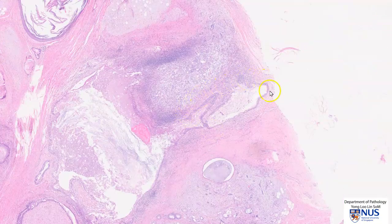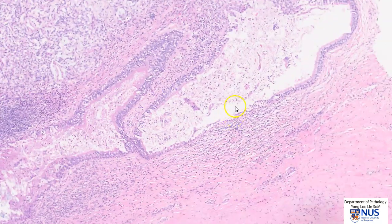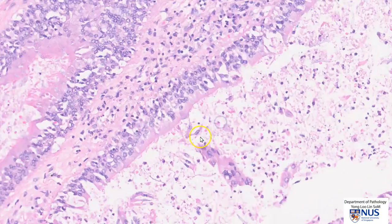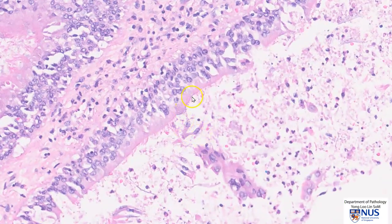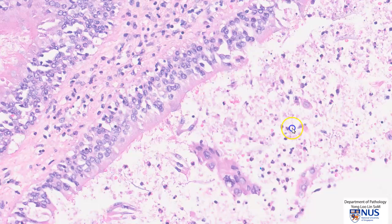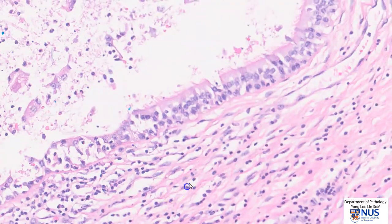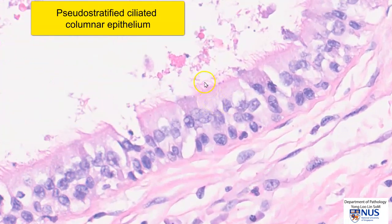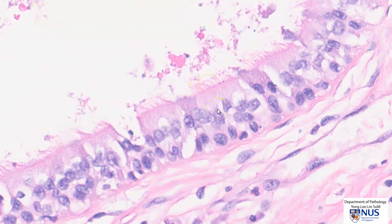In this region, we can also see a cystic structure, and the lining of this cystic structure is quite different from what we saw earlier. Instead of stratified squamous epithelium, we actually have pseudo-stratified columnar ciliated epithelium, and you can see very well-formed cilia here. This is respiratory-type epithelium, and this is derived from endoderm.